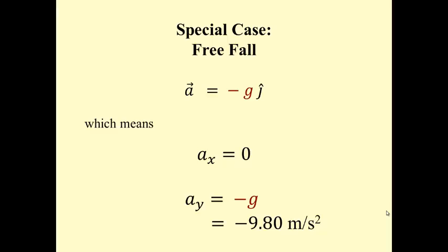When we do free fall, that means the acceleration is due entirely to gravity, no drag forces of any kind, in which case the acceleration is purely in the y direction. The x component is 0, the y component is negative g, or negative 9.80 meters per second squared.